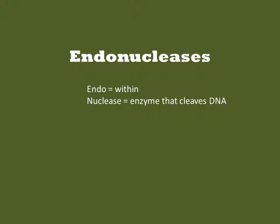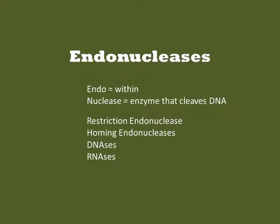Endonucleases are enzymes that cleave a DNA internal to its sequence. Because they operate on the internal sequence of a DNA, they operate equally on linear and circular DNAs. This class includes restriction endonucleases, homing endonucleases, DNases, and RNases.